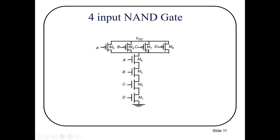4-input NAND gate: this is the output terminal. We have A, B, C, and D in series because we are implementing a 4-input NAND gate. In the pull-down network we use only N-MOS transistors — 4 N-MOS transistors in series. Similarly in the pull-up network we use P-MOS transistors — 4 P-MOS transistors but in parallel combination. Apply VDD and ground, and this is your output terminal. You can use this standard procedure to implement any combinational logic circuit.